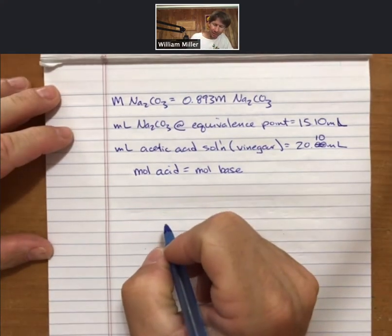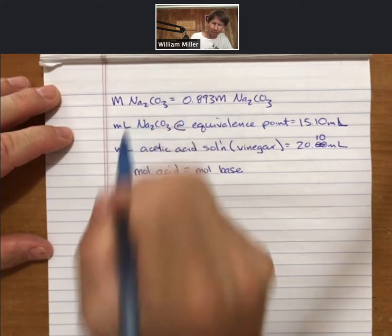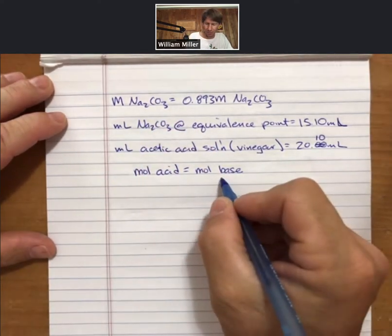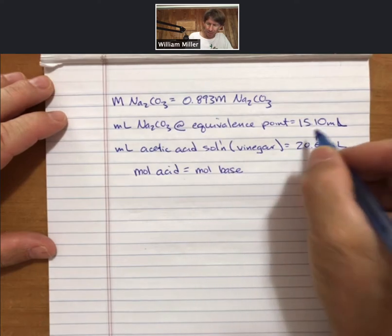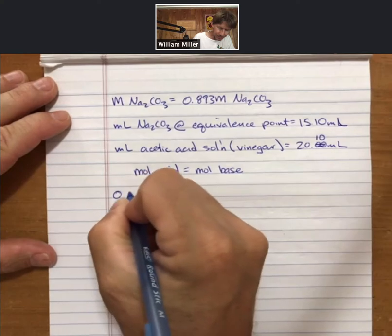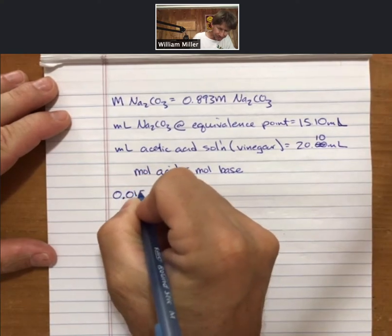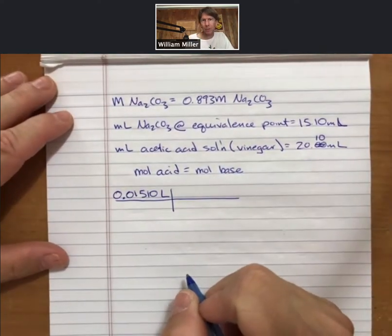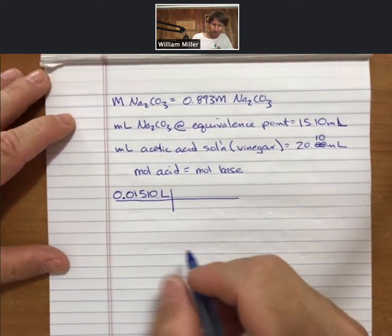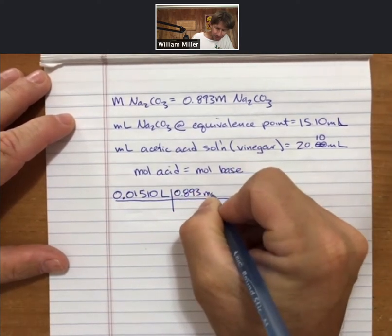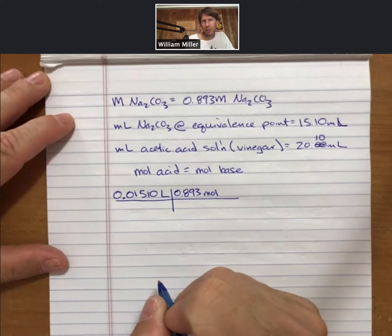Now, from there, I will start. Because I have my volume and my molarity of my base, I can find my moles of base. I'm going to convert my milliliters into liters and multiply that by the molarity, which is really 0.893 moles of sodium carbonate per liter.